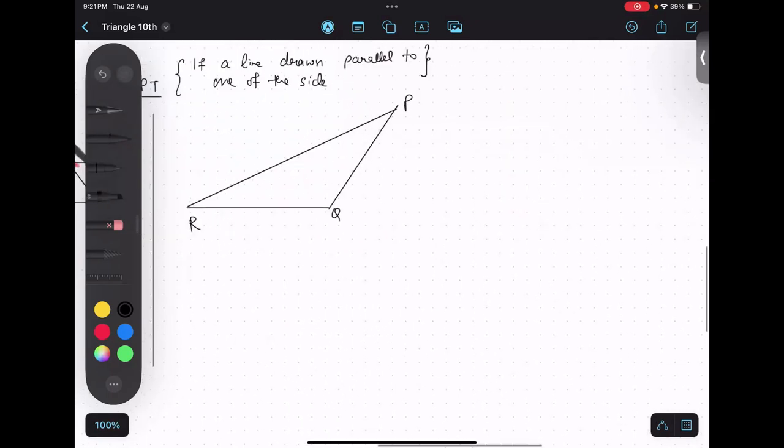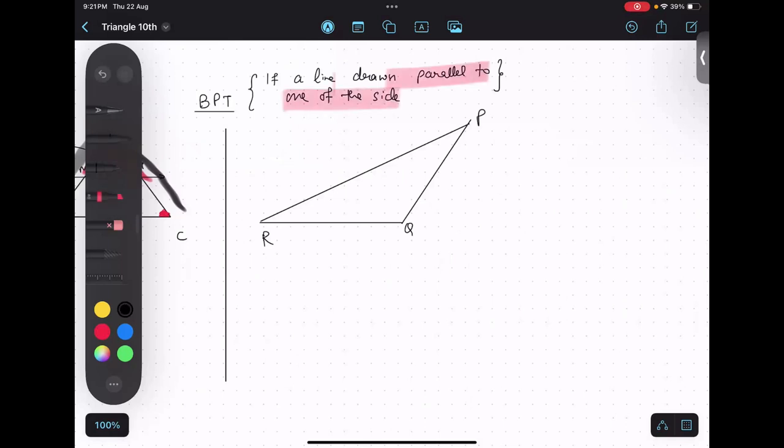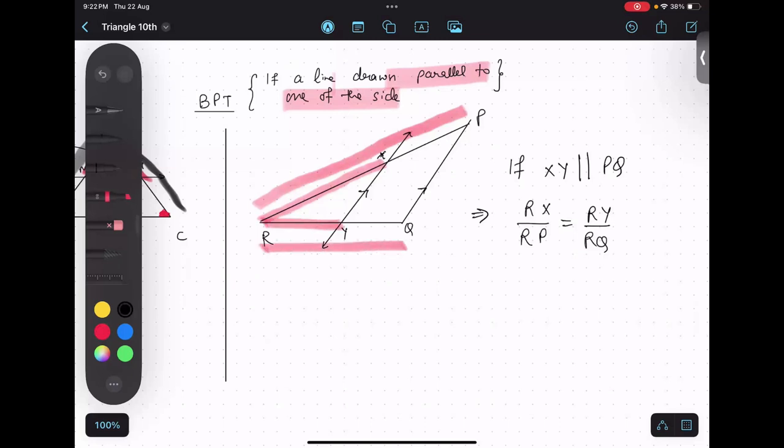Now let me just summarize. BPT tells us if a line is parallel to one of the side, then what will happen? This is X, this is Y. So as soon as I see that it is given that XY is parallel to PQ, then what will happen? This side will be proportional to this side. Make sense? Yes. RX upon RP will be equals to RY upon RQ and RY upon RQ and XY upon PQ. This is the basic concept of BPT. Please take a screenshot of this thing if you have not copied as of now. I'll make sure you copy later on.